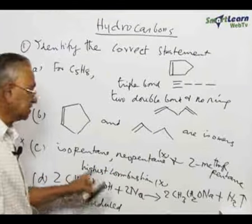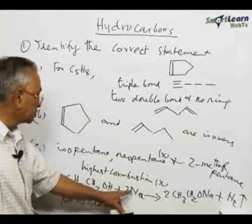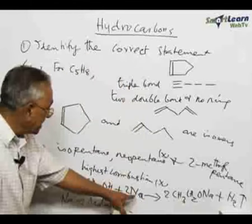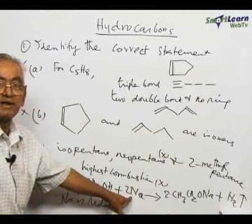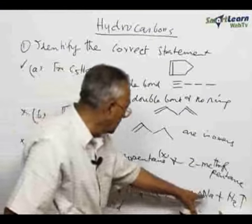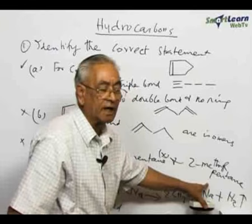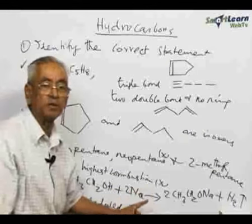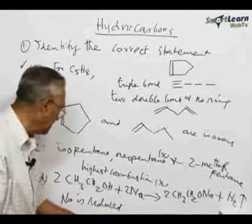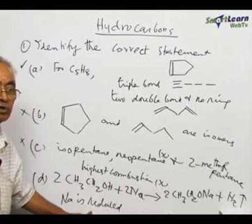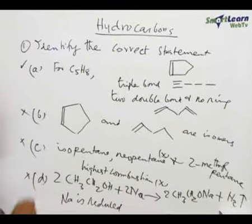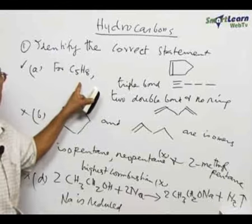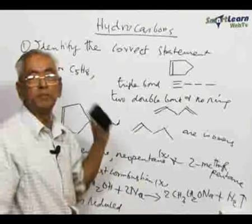The last statement: when ethyl alcohol is treated with sodium metal, it gives sodium ethoxide and liberates hydrogen. The oxidation state of sodium in its elemental state is 0, and in sodium ethoxide it is +1. Therefore, the oxidation number changes from 0 to +1, which means sodium is oxidized, not reduced. So statement D is also not correct. Among the four statements, only A is correct, because for C₅H₈ all three structural possibilities can be explained.